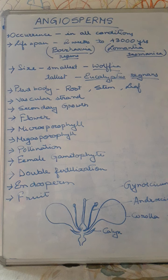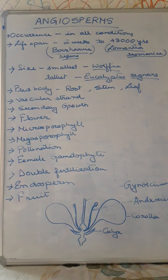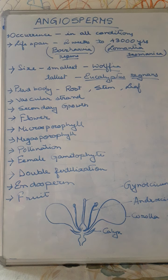For a lifespan of two weeks, the example is Boerhavia, which may exist for only two weeks. Lomatia tasmanica survives for almost 43,000 years. The size of plants also varies in angiosperms — we see the smallest water plant, Wolffia, which is about less than 0.1 millimeter, and the tallest plant, Eucalyptus regnans.